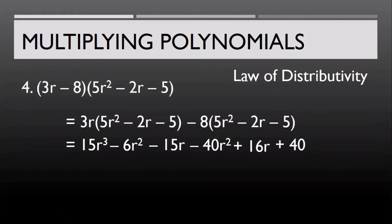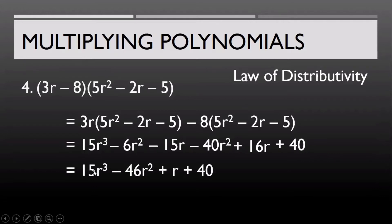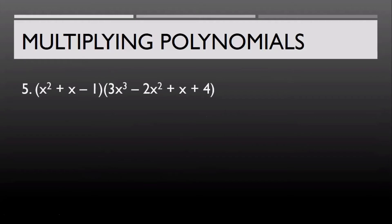And negative 8 multiplied by negative 5 gives us plus 40. Now combining like terms: copy 15r³, then −6r² − 40r² = −46r², then −15r + 16r = +r, and just copy the constant 40. So the final answer is 15r³ − 46r² + r + 40.